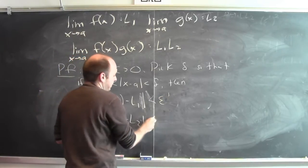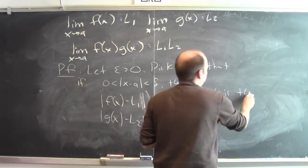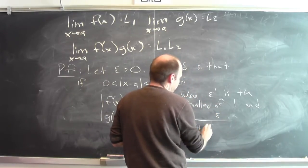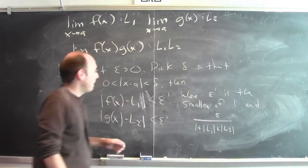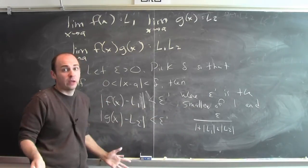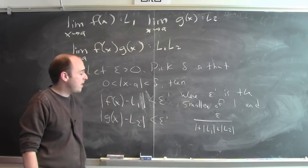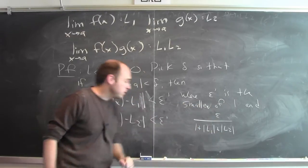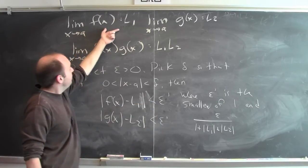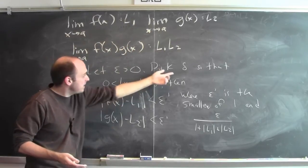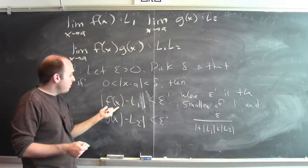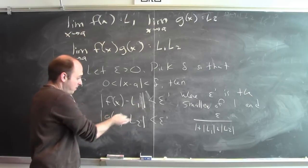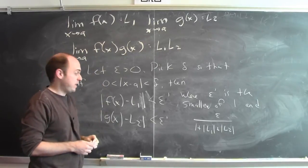Let's say both |f(x) − l1| and |g(x) − l2| are less than epsilon prime, where epsilon prime is the smaller of 1 and epsilon over (1 + |l1| + |l2|). This seems a little made up right now — where did it come from? It's going to end up working. Epsilon prime is some positive number, and since the limits of f(x) and g(x) exist and equal l1 and l2, I can choose delta small enough so that whenever x is within delta of a, f(x) is within epsilon prime of l1 and g(x) is within epsilon prime of l2.